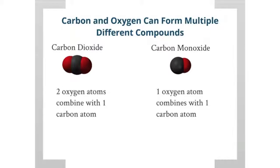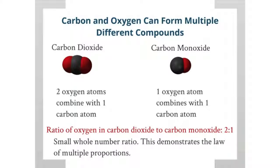If we look at the ratio of oxygen in carbon dioxide to carbon monoxide, that ratio is 2 to 1. We have two oxygens for every carbon in carbon dioxide and one oxygen for every carbon in carbon monoxide. So the ratio is 2 to 1, which is a small whole number ratio. This aptly demonstrates the law of multiple proportions.